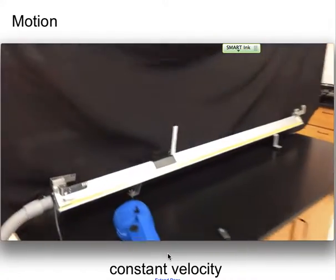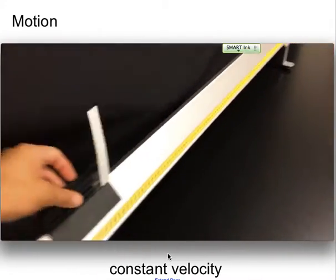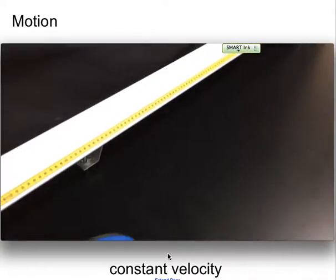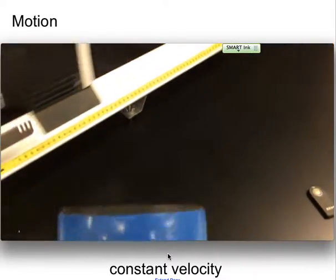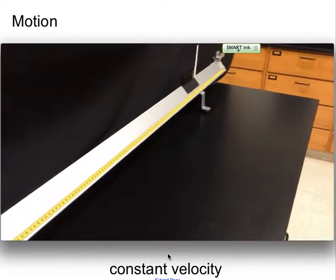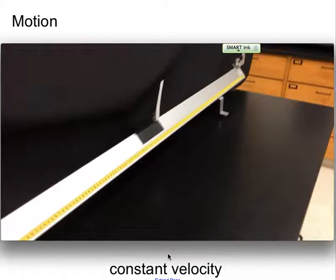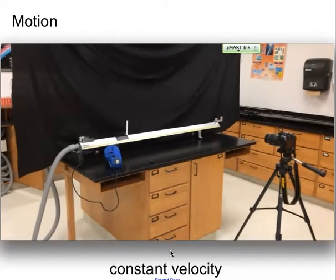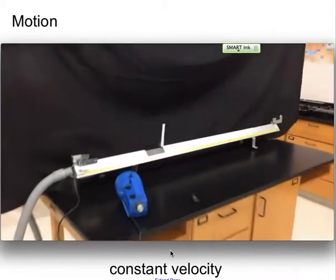You can see an air track. This is very much like an air hockey table, except the track only allows the glider that sits on top of the track to move back and forth. The air from underneath reduces the friction, so you can see that after accelerating from the force of my push, which we'll talk about later in the year, the glider has no unbalanced forces acting on it.